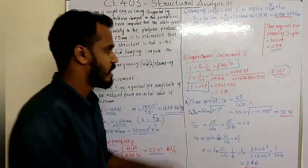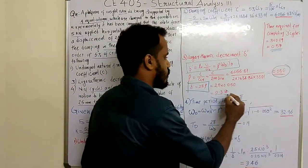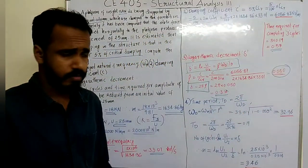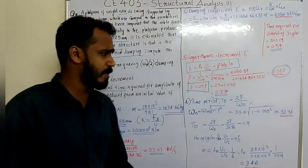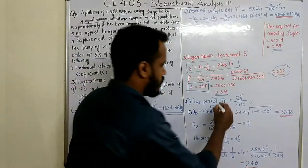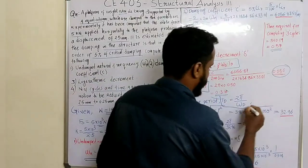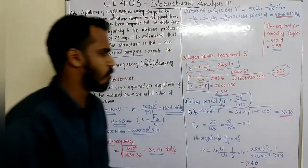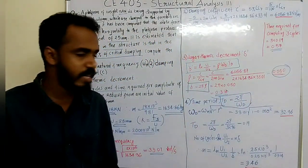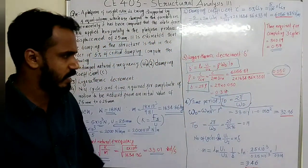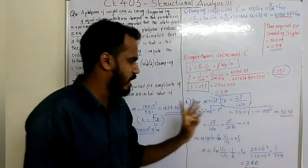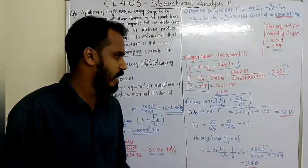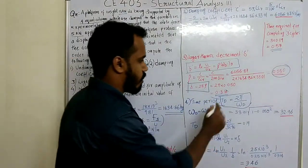Delta is equal to 0.314. The damped time period t_d is equal to 2π divided by omega_d.